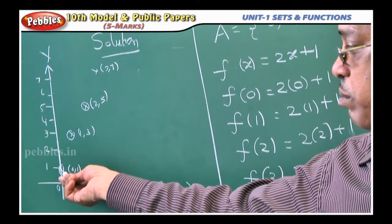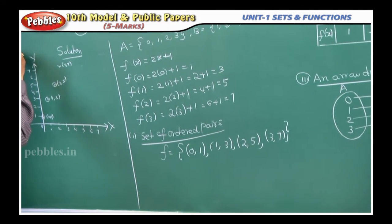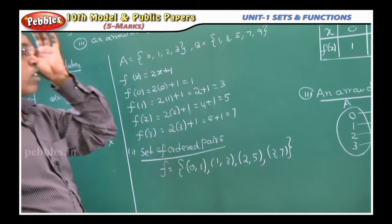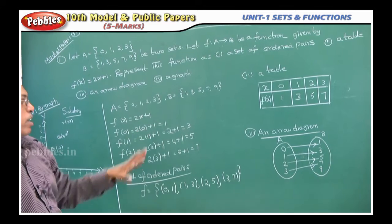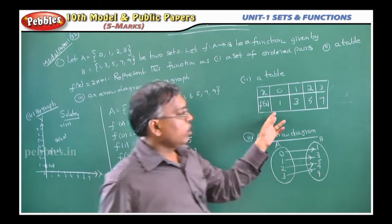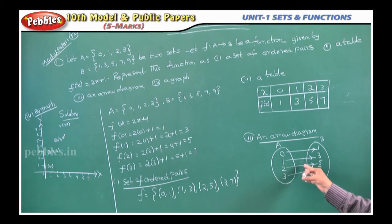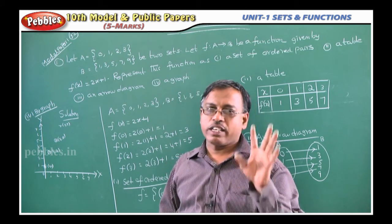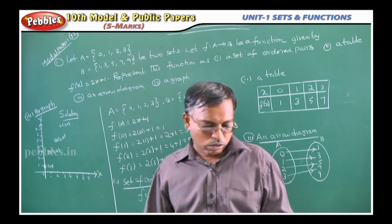Instead of a cross symbol you can put a dot symbol — that does not matter. So these are the 4 ways of representing a function: by graphical representation. Listen one more time: elements are given in set A and set B, and you have to represent the function as ordered pairs, table, arrow diagram, and graph. Find the images by replacing x in the formula, write the ordered pairs, fill in the table with x and f(x), draw the arrow diagram with arrows, and for the graph take the coordinate system, plot 1 centimeter = 1 unit, and represent all the ordered pairs as points.